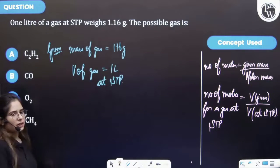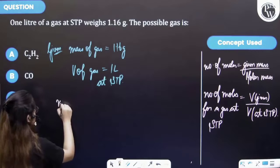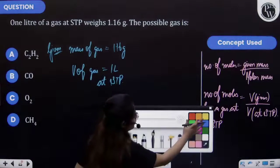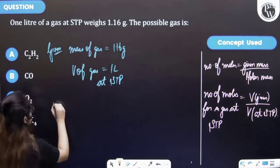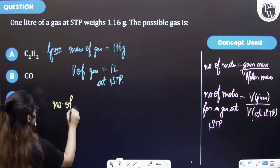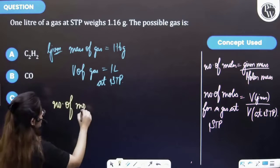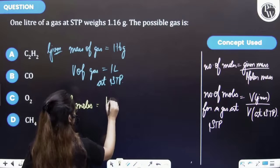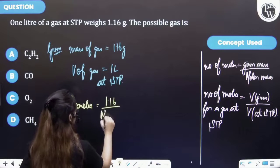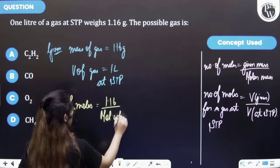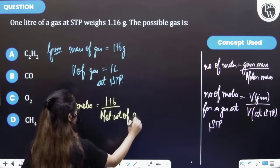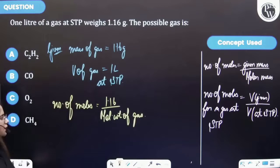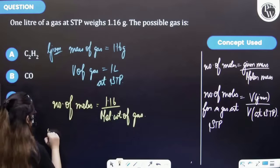Now let's find the number of moles. Number of moles from the first formula that is written over there, number of moles will be equal to molecular weight. We have to identify, because from that we will get to know which gas is there. Next, number of moles.